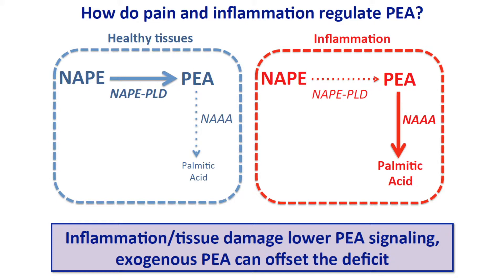We should care, because if inflammation and tissue damage lower PEA production, then by replacing the PEA that we have lost in inflammation, we will have an analgesic and anti-inflammatory effect. Administration of exogenous PEA can offset this deficit. We are giving a vitamin to a tissue that suffers from hypovitaminosis. It's restoring a normal level of an endogenous anti-inflammatory and analgesic agent.